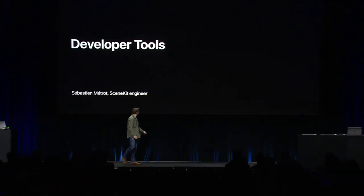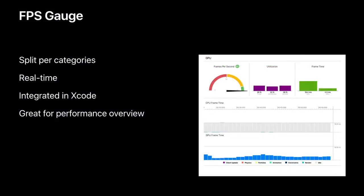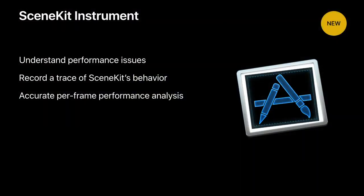Thank you, Amory. Last year, we introduced the FPS gauges — a great way to have an overview of the performance of your application regarding SceneKit. They split categories so you can see exactly where time is taken for the CPU and the GPU — whether it's going into rendering, physics, or particles. This year, we are introducing a new instrument — a template for SceneKit that you can use to record the trace of your application and know exactly what happens frame by frame.